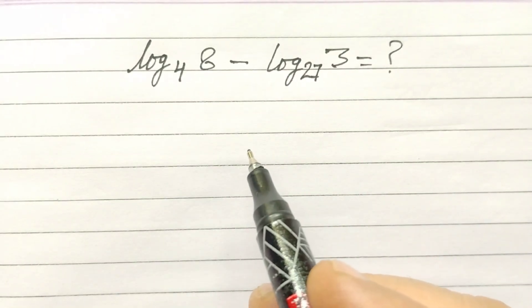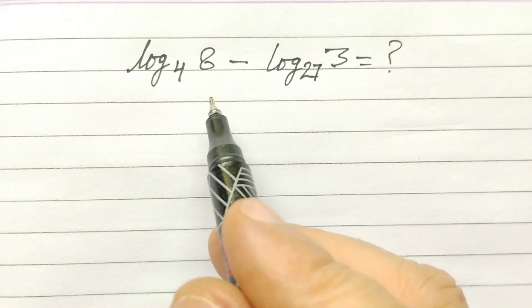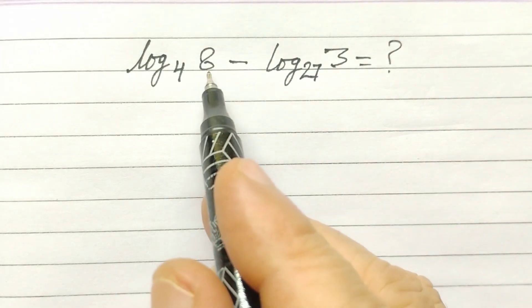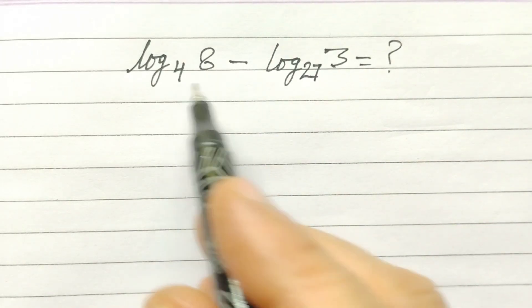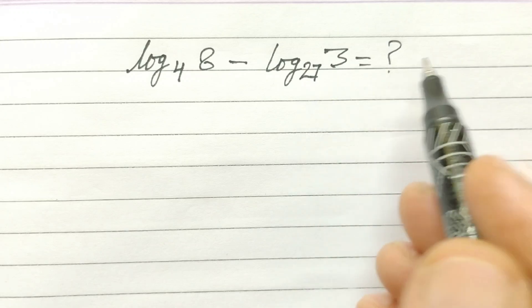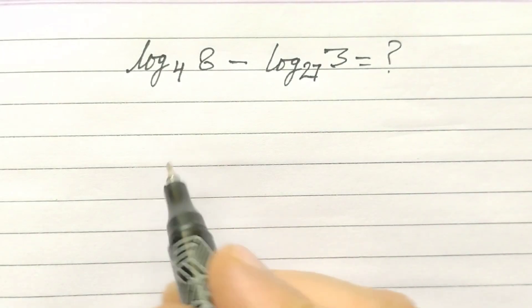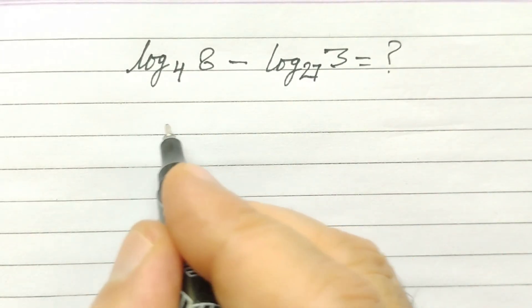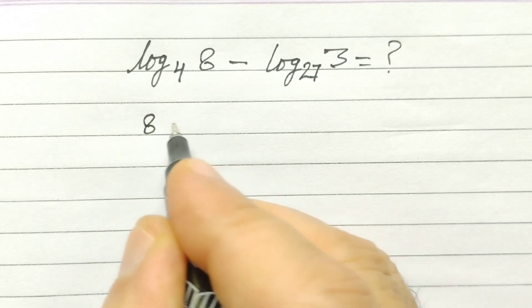Hi friends, welcome to my channel. Today we have a logarithmic problem: log of 8 to the base 4 minus log of 3 to the base 27 equals what? So let's start. 8 can be written...